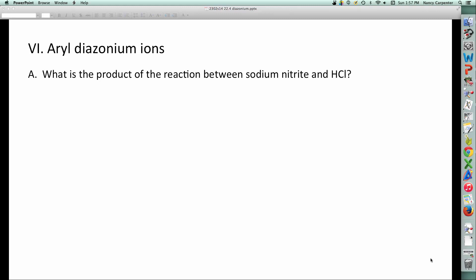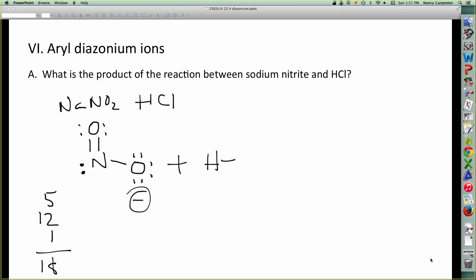Okay, diazonium ions. To start with aryl diazonium ions, we have to go back to general chemistry and think about what would happen if I threw together sodium nitrite and HCl. Which means you need to remember what, or be able to come up with, a reasonable Lewis structure for NaNO2. Which of course would be anionic. Five electrons from nitrogen, twelve from oxygen, and then an extra because it's an anion, so 18. So there's our sodium nitrite, negatively charged.